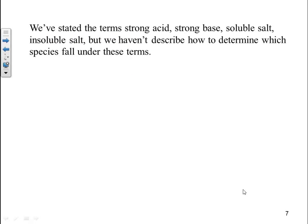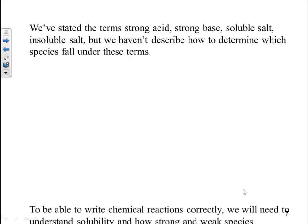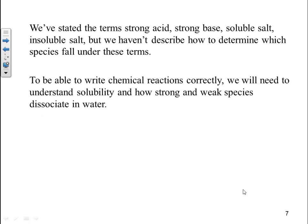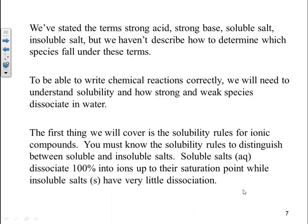We've stated the terms strong acid, strong base, and insoluble salt, but we haven't described how to determine which species fall under these terms. To write chemical reactions correctly, we need to understand solubility and how strong and weak species dissociate in water. The first thing we'll cover is the solubility rules for ionic compounds. You must know the solubility rules to distinguish between soluble and insoluble salts.